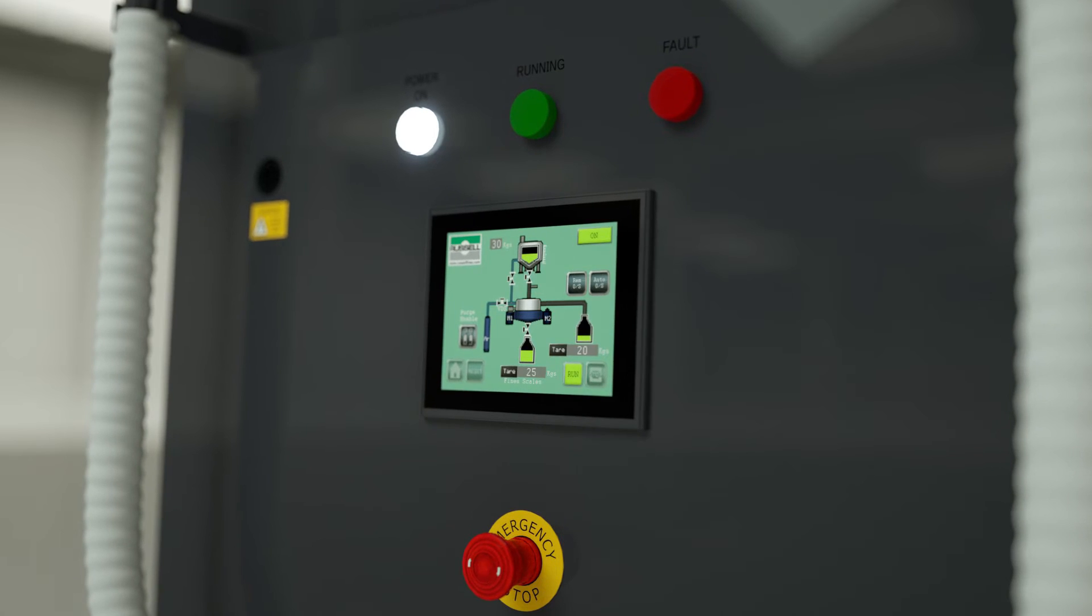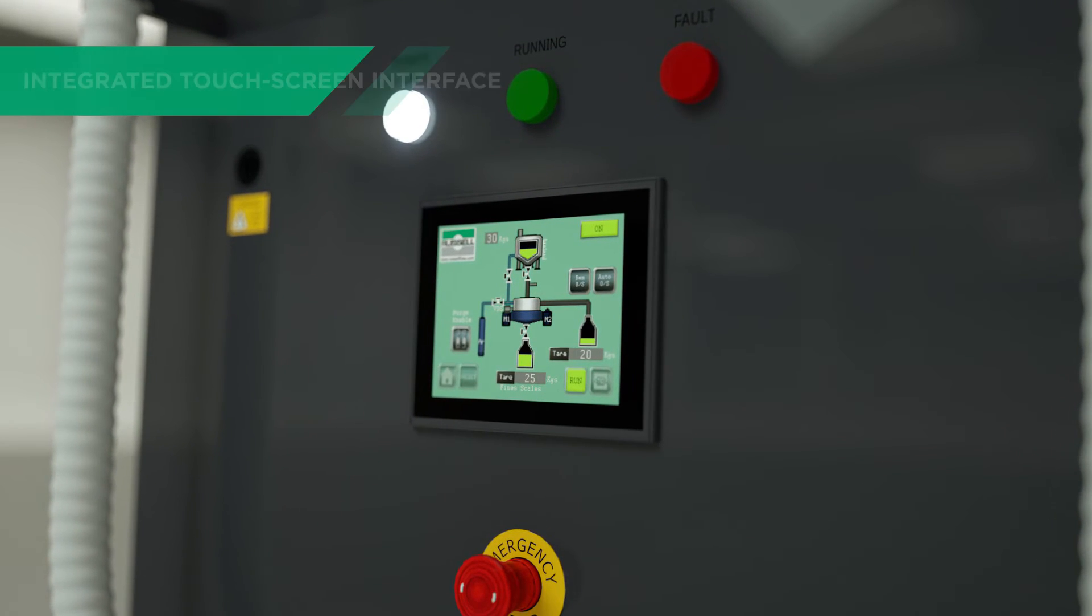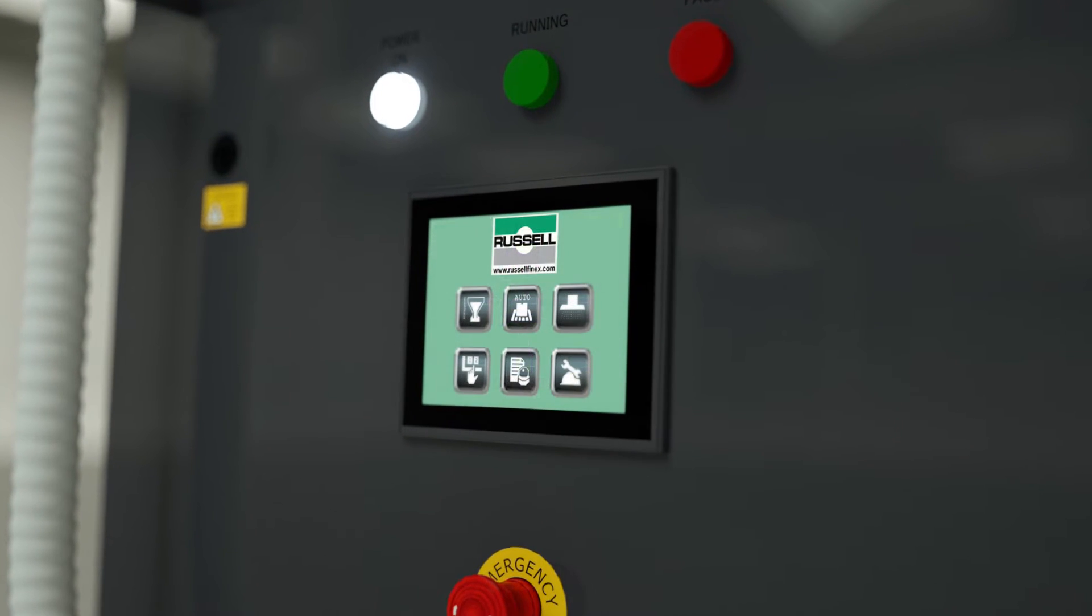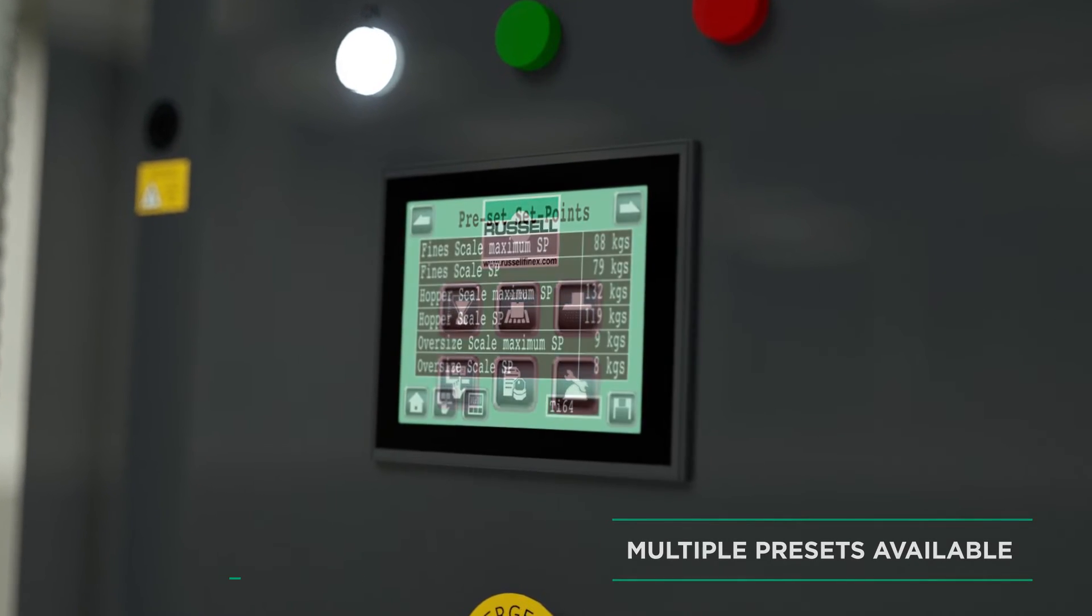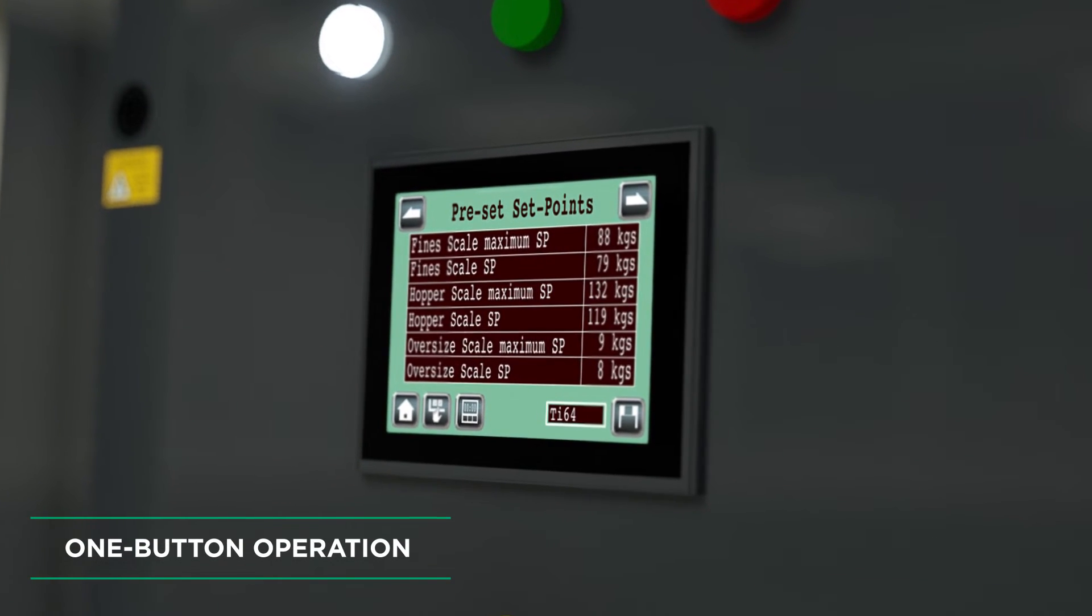The Russell Ampro sieve station has a range of integrated features controlled by a revolutionary integrated touchscreen interface. This is a game-changer for the industry, fully programmable with multiple presets, allowing simple, one-button operation.